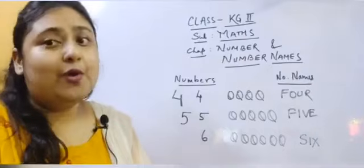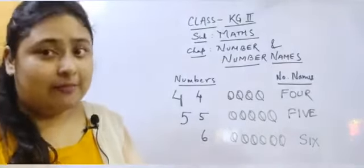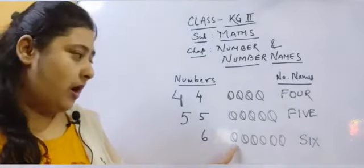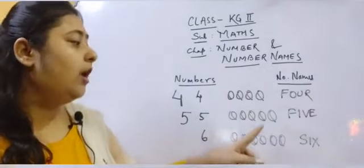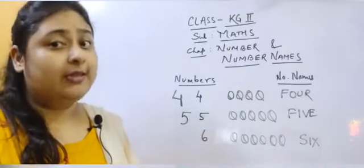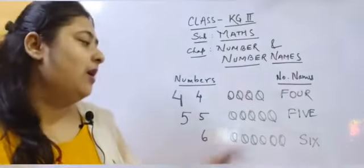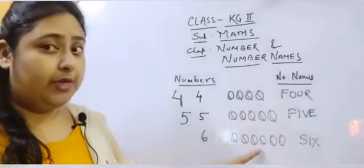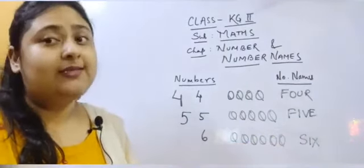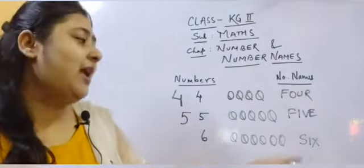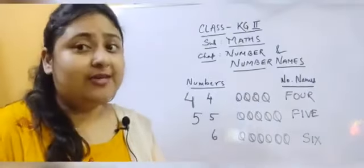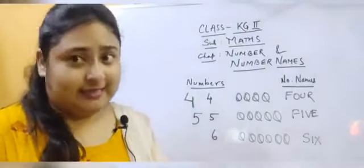Now moving on to the next number — it is number 6. Let's count the number of balls, children: 1, 2, 3, 4, 5, 6. So how many balls are there? There are 6 balls. What is the spelling of number 6, children? S-I-X. How do we write number 6, children? We write number 6 like this.